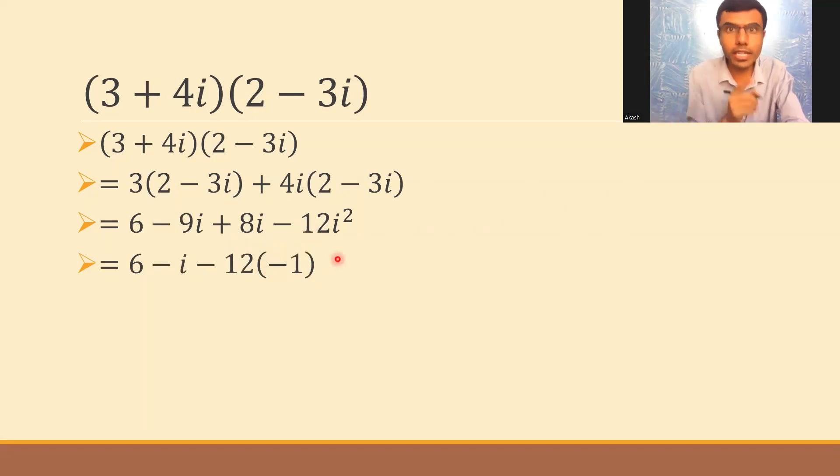Minus 12 into i square is minus 1. i square is minus 1. Now, this would be nothing but 6 minus i plus 12. 6 plus 12 is 18. This is nothing but 18 minus i.